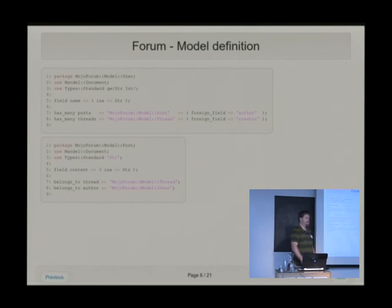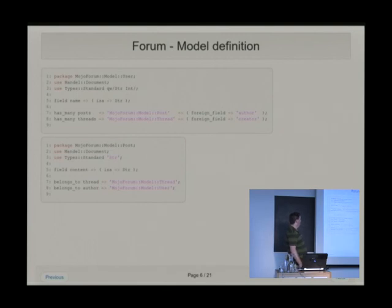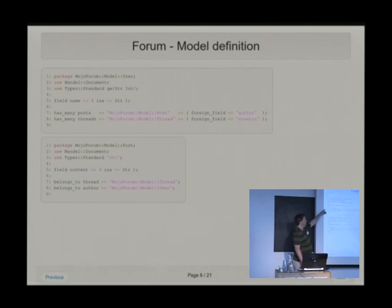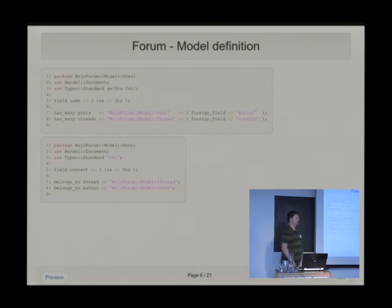Let's define our model. This is how you define a model in Mandl — these are truncated a bit. The basic field we care about in the user object is his or her name. Then we have two has-manys: posts and threads, which point to different classes. I'm only including threads for completeness; I'm not really going to talk about how threads work.